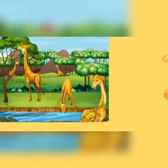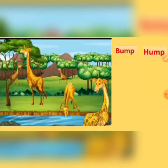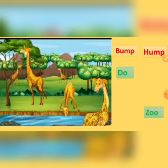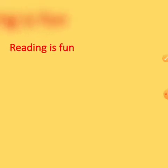Now let us find out rhyming words from the poem. Which word rhymes with 'bump'? Yes — 'hump'! And: zoo, lake, make. These are rhyming words. Children, will you help me find the answers?